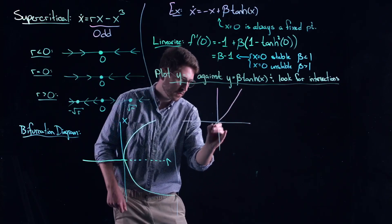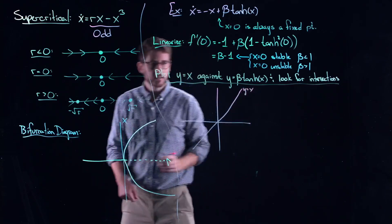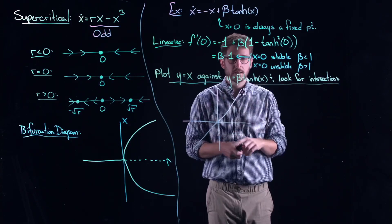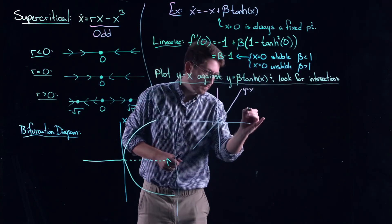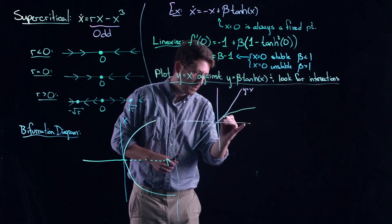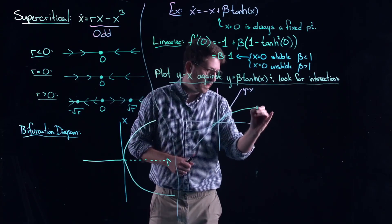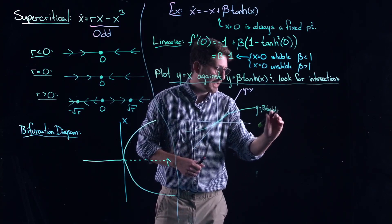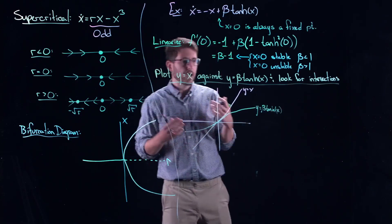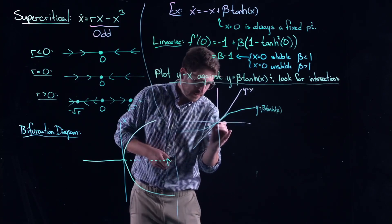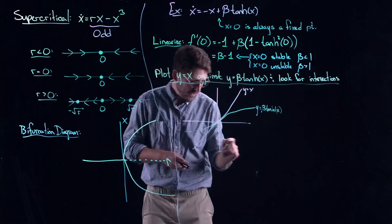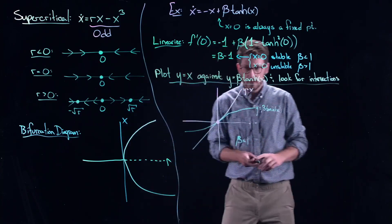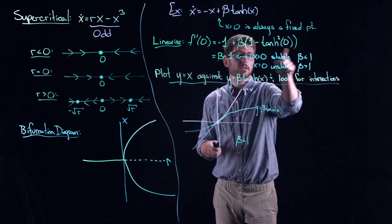So we have y equal to x looking like this. It doesn't change. Now, essentially all beta does is it expands or contracts this hyperbolic tangent function. And one possibility is when beta is small, you get this. You can use your favorite plotter if you want. You can use maybe Desmos or Wolfram Alpha, Maple, Matlab, Mathematica, whatever it happens to be. But in this case, this is essentially when beta is less than one.